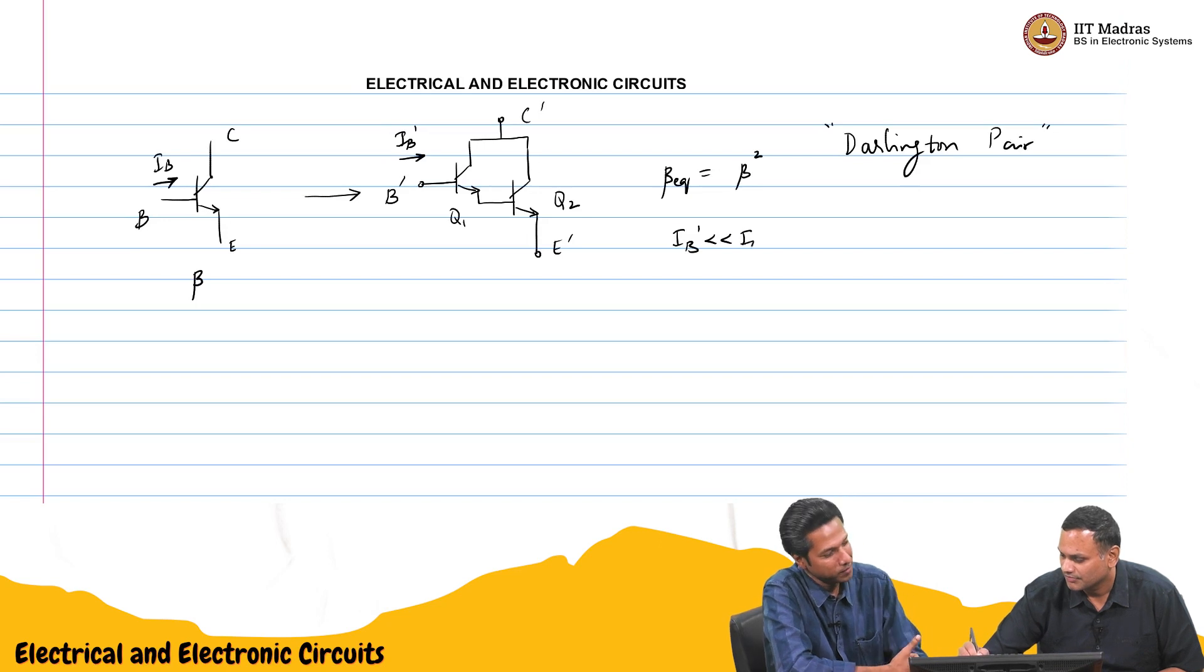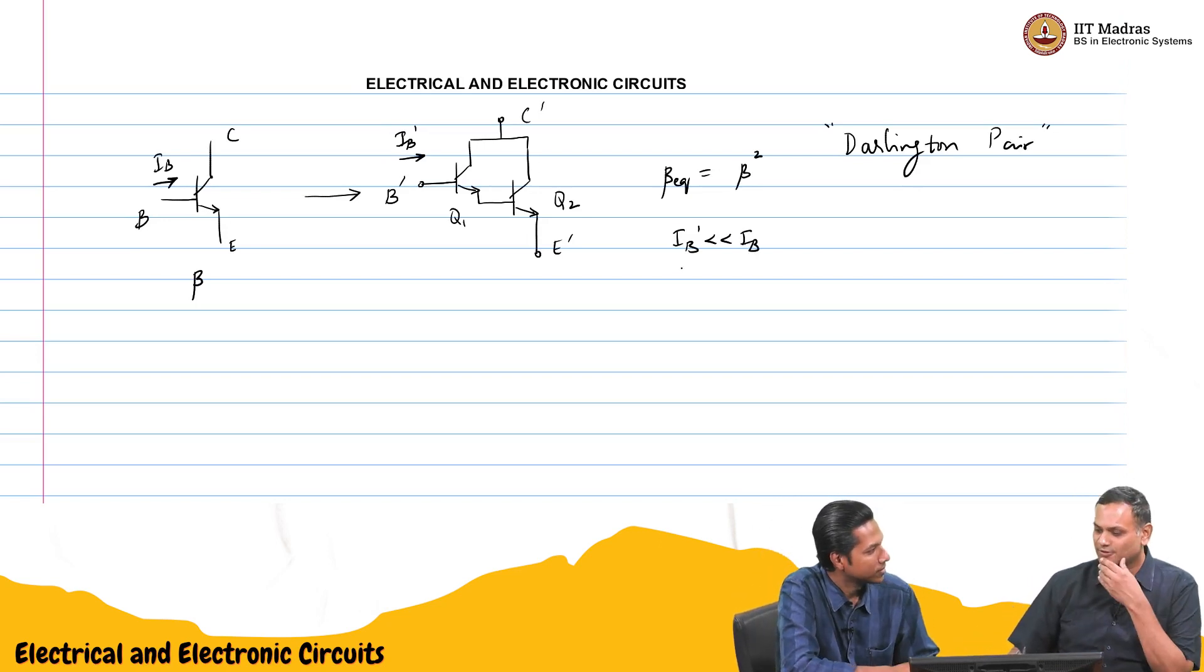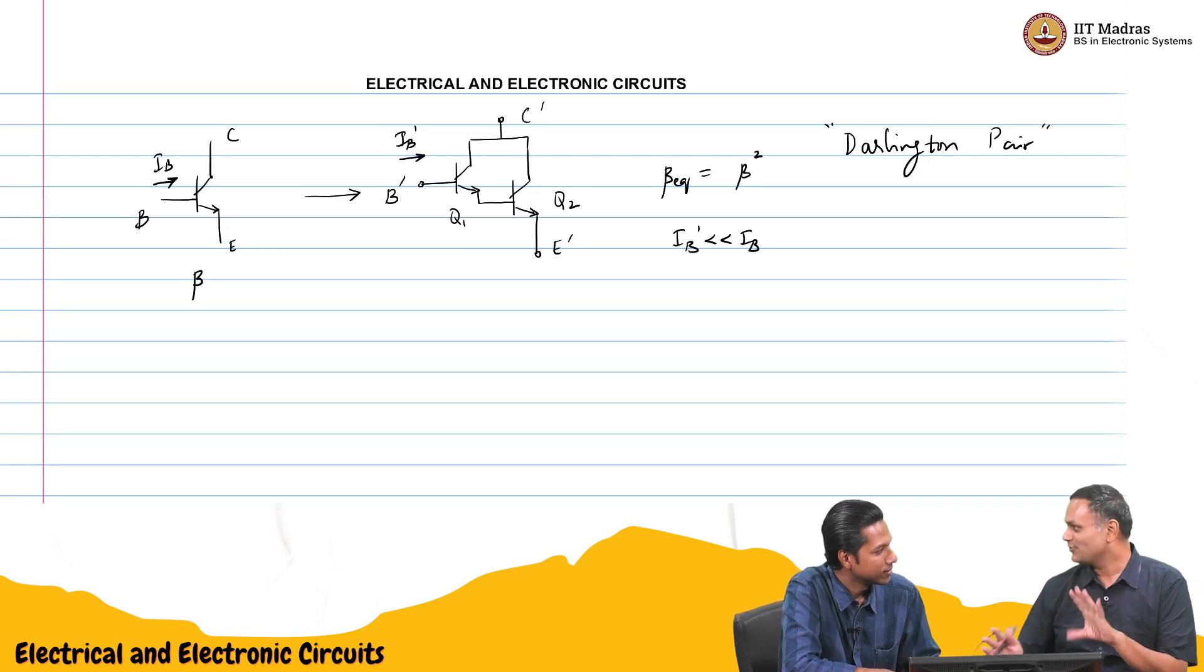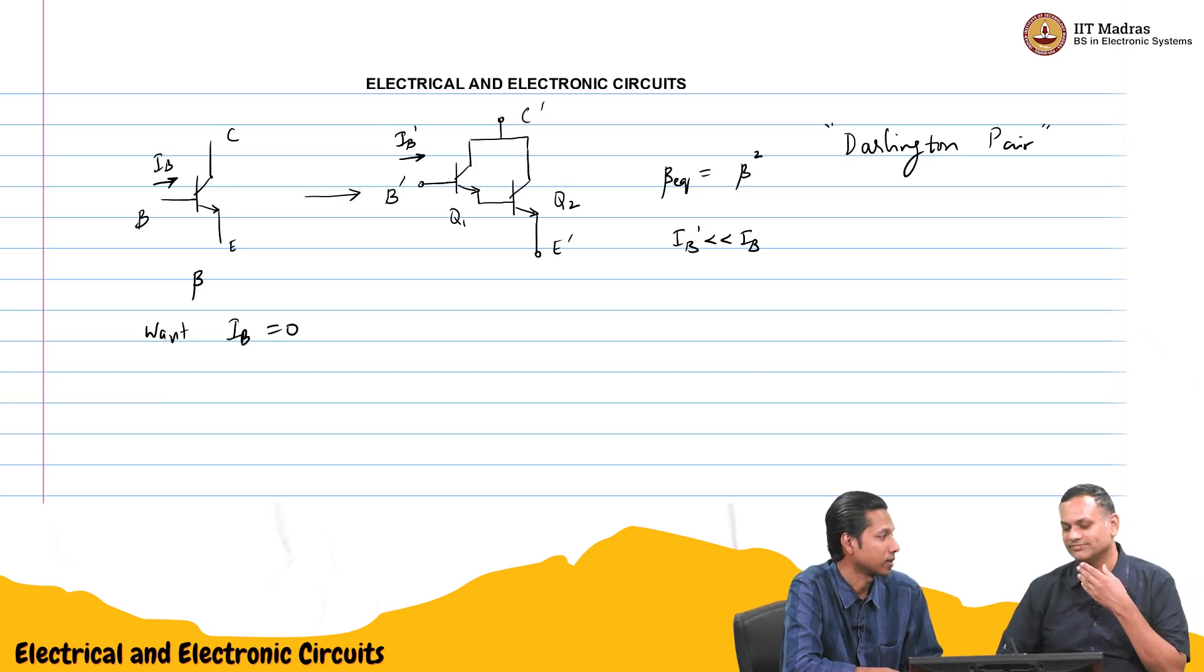We are not supposed to draw current ideally. That is true. So is there something like that available? So you want a device where actually there is no base current. Yeah, right? So you basically want IB equal to 0. Correct. So it should look like an open circuit, like an insulator.